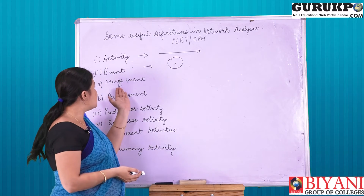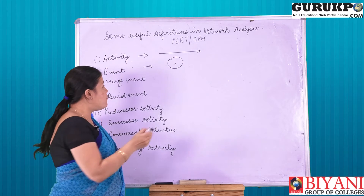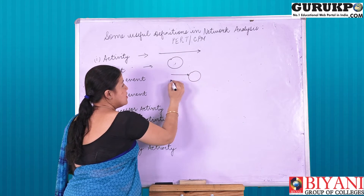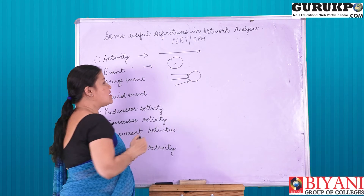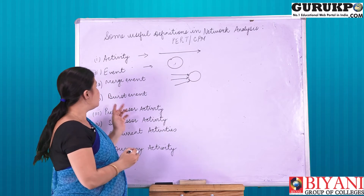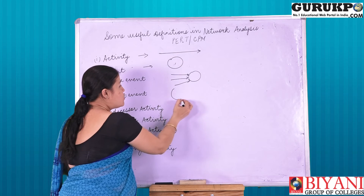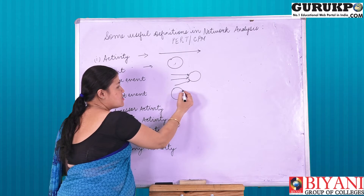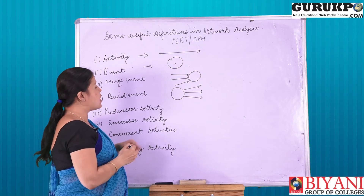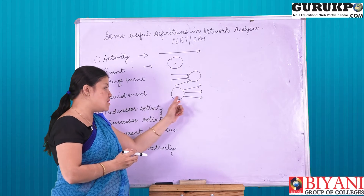Moving on to the next is merge event. As indicated by the name, when two or more activities combine into a single activity, that event is known as a merge event. Next is burst event. A burst event is when from one activity, two or more activities are dispersed — that particular event is known as a burst event.